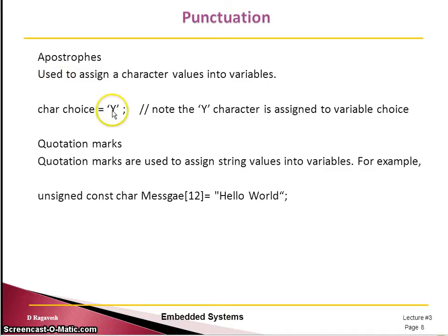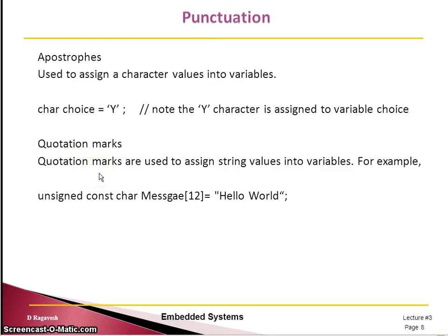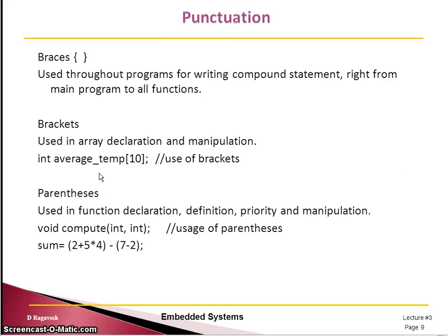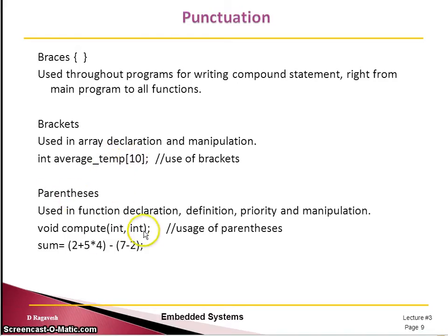When using the character data type, the character denotes only a single letter, so it has to be assigned using single quotes. When you want to assign a string to a variable, you use double quotes. The braces (curly parentheses) are important — even the main C function starts with a curly brace. Square brackets are used exclusively for array declaration and manipulation. Round parentheses are used for functions — calling or passing arguments — and also to indicate precedence in an expression.